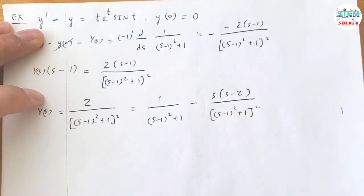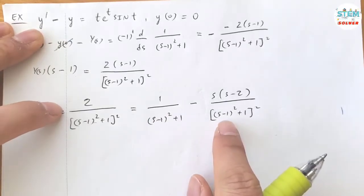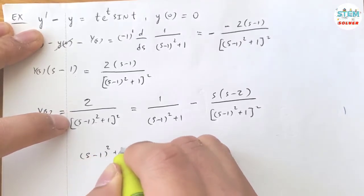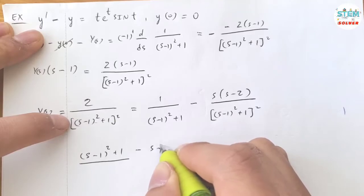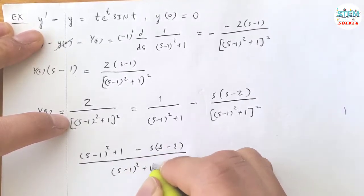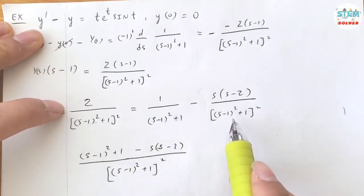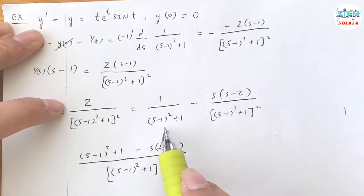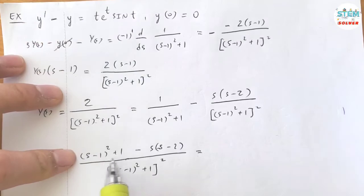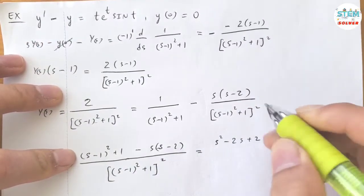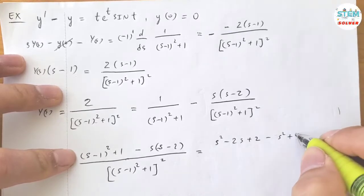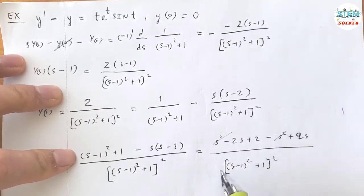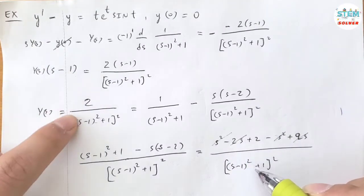Alright, let me explain how I got this. So if I cross multiply this together, I got s minus 1 square plus 1 minus s times s minus 2 over s minus 1 square plus 1 square. So I multiply this by this, I multiply this by itself, and then subtract this to get the same. And then all over the same denominator, which is this one. And then multiply this by itself. I have s square minus 2s plus 2 minus s square plus 2s over s minus 1 square plus 1 square. So s square minus s square, negative 2s plus 2s, so I'm left with 2 over this, which is what we have here.